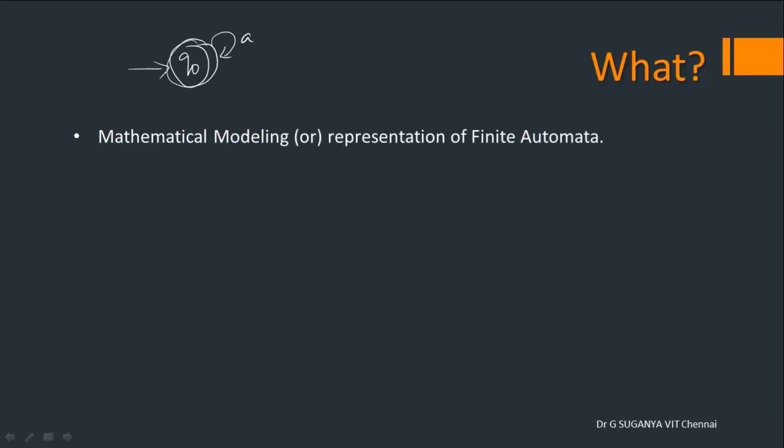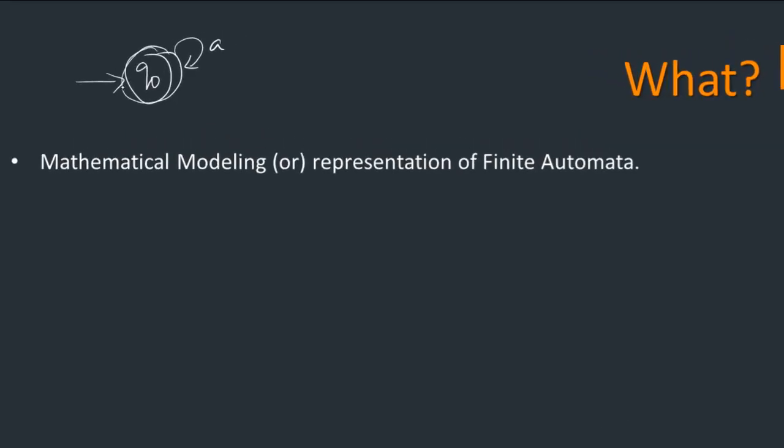This is the visual representation of the language we want to convey to the audience or to the person who are in need of our representation. So what is the language that this will generate? We know it is epsilon because start state becomes the final state. One time you can be on the state,